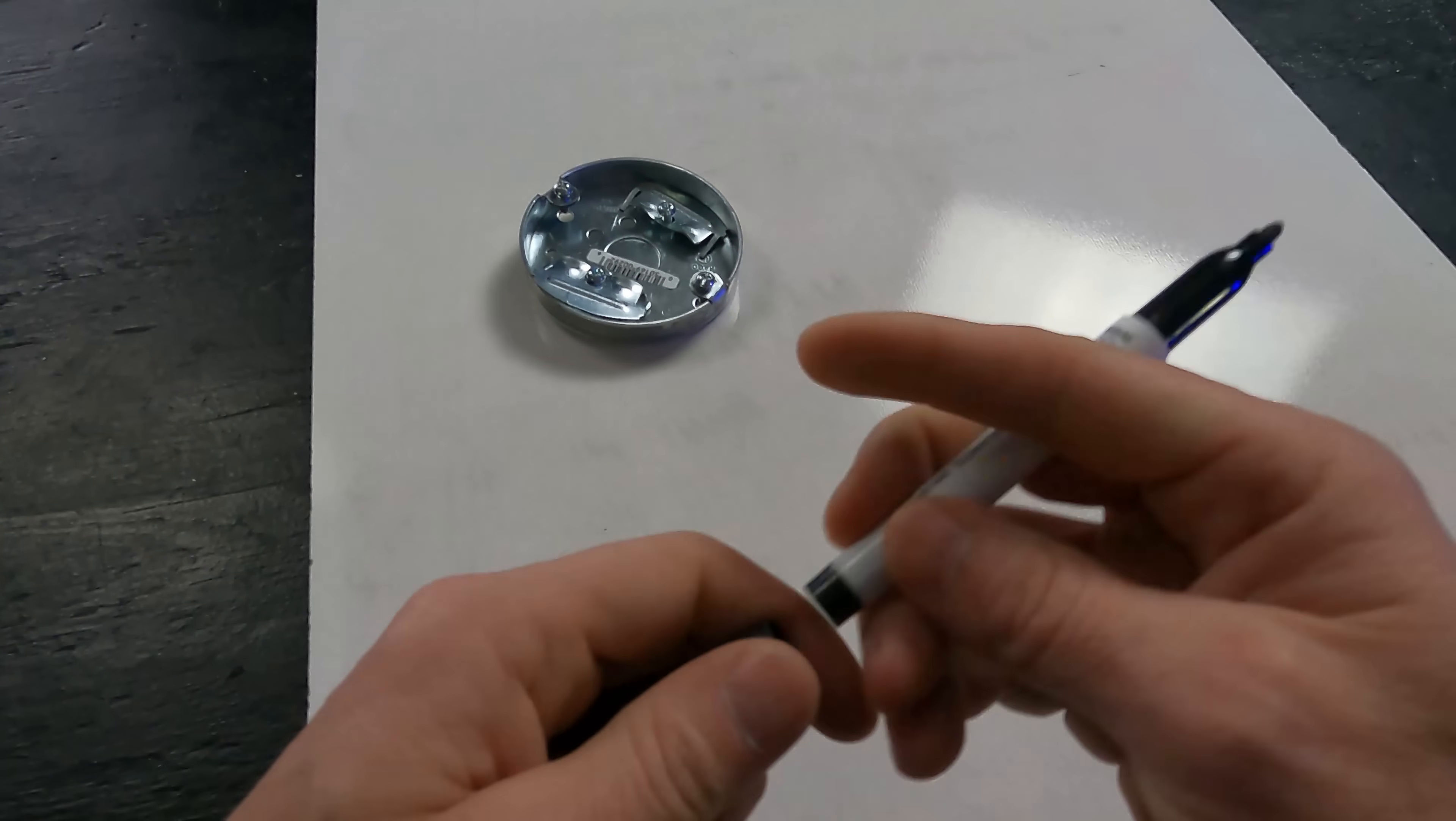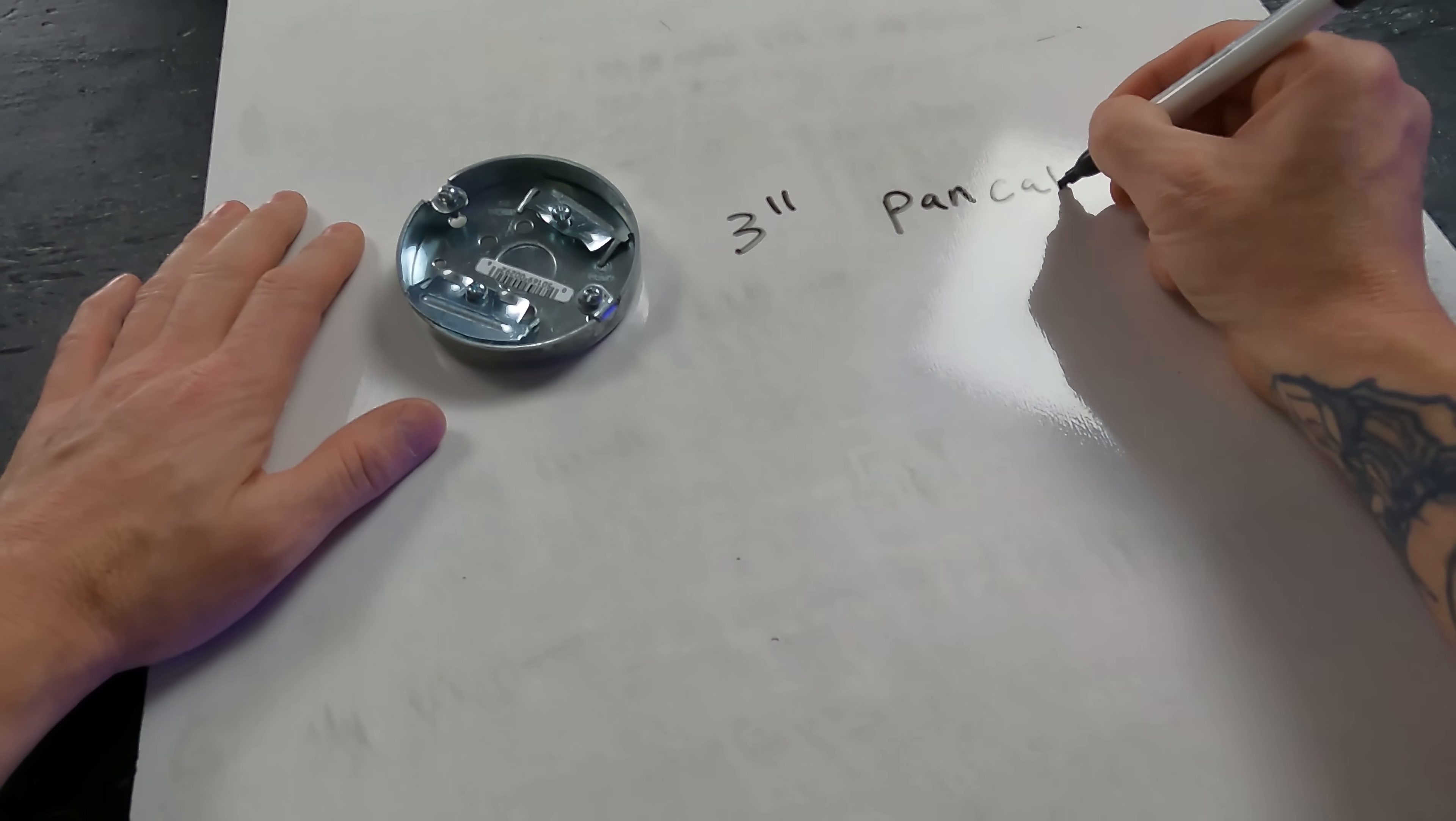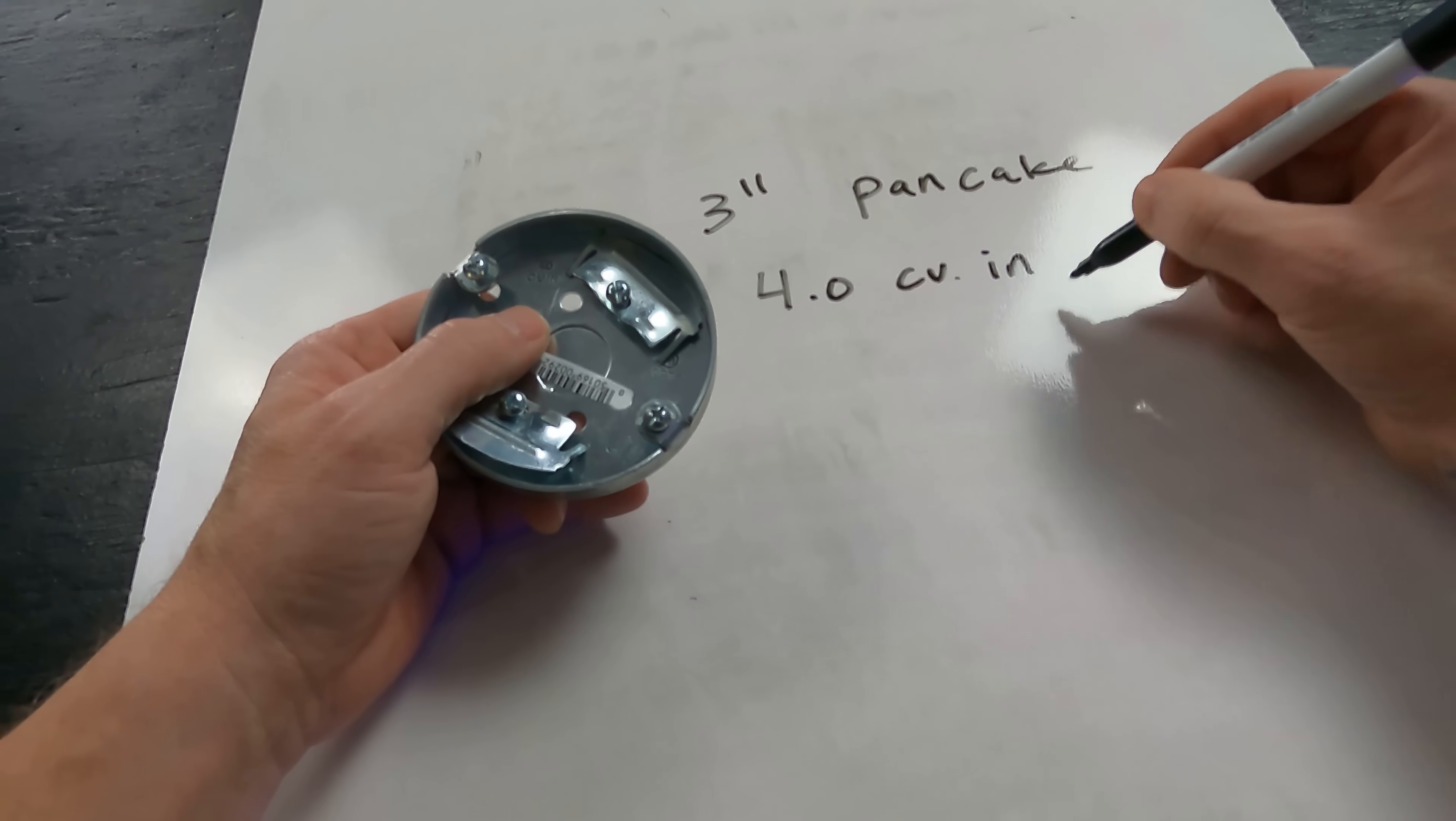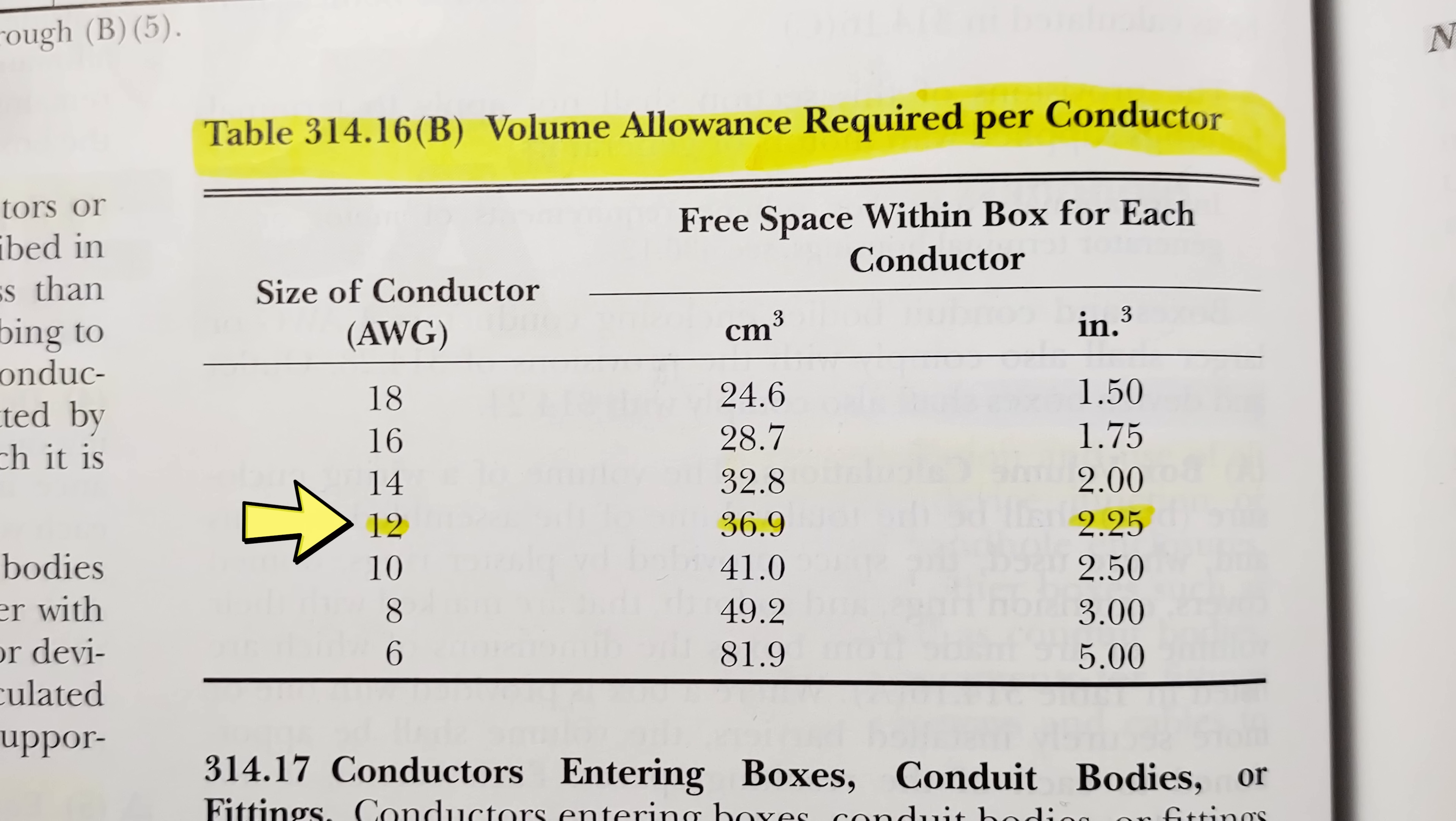Let's look at our first example. This is a three-inch pancake. This three-inch pancake says that it has a 4.0 cubic inch volume. If we look at our table, we've got a number 12 conductor. Let's say we're going to run 12-2, which ends up being three number 12 conductors.